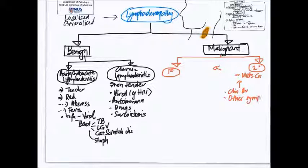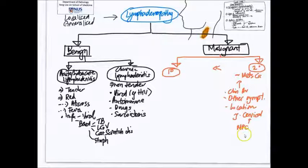It is important to pay attention to other symptoms because this may help to localize the source of the malignancy, and in addition we also want to see the location of the lymph node. For example, if it is a cervical lymph node such as in this patient, you may want to consider common primary malignancies that can go there, for example nasopharyngeal carcinoma or papillary thyroid carcinoma.